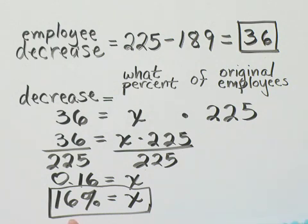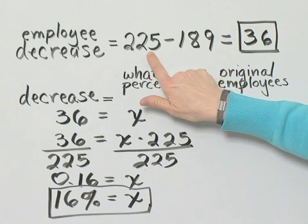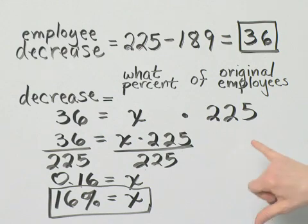Now, how can you check? Well, find 16% of 225, subtract it from 225, and you should have that 189. So the decrease is 16%.